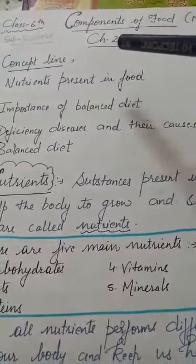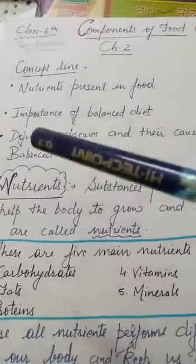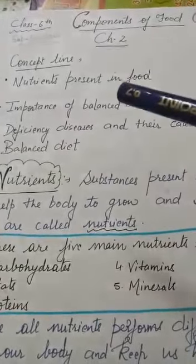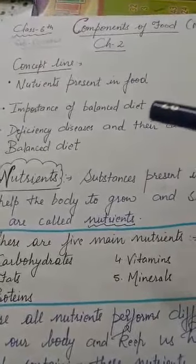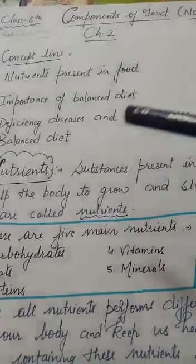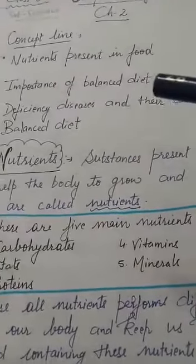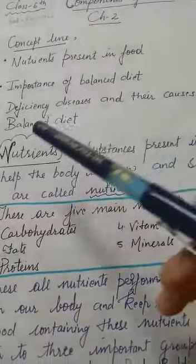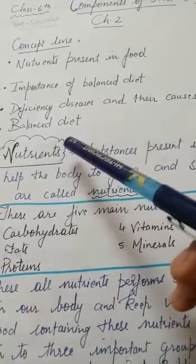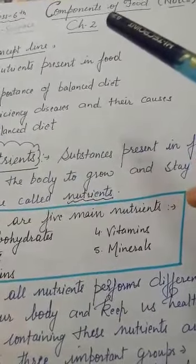Today I will teach you Chapter 2: Components of Food, from Class 6 Science. In your previous chapter, you learned that we need food to get essential nutrients for our growth and development. We should eat all kinds of food to get different nutrients. Today in this topic, you will learn about nutrients present in food, the importance of a balanced diet, deficiency diseases and their causes.